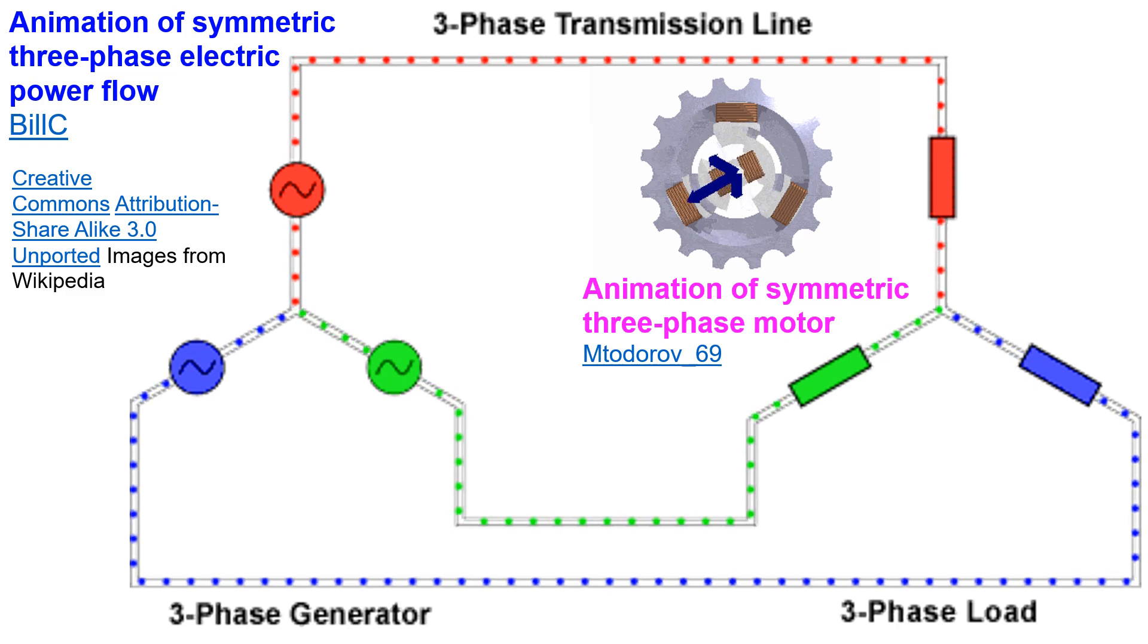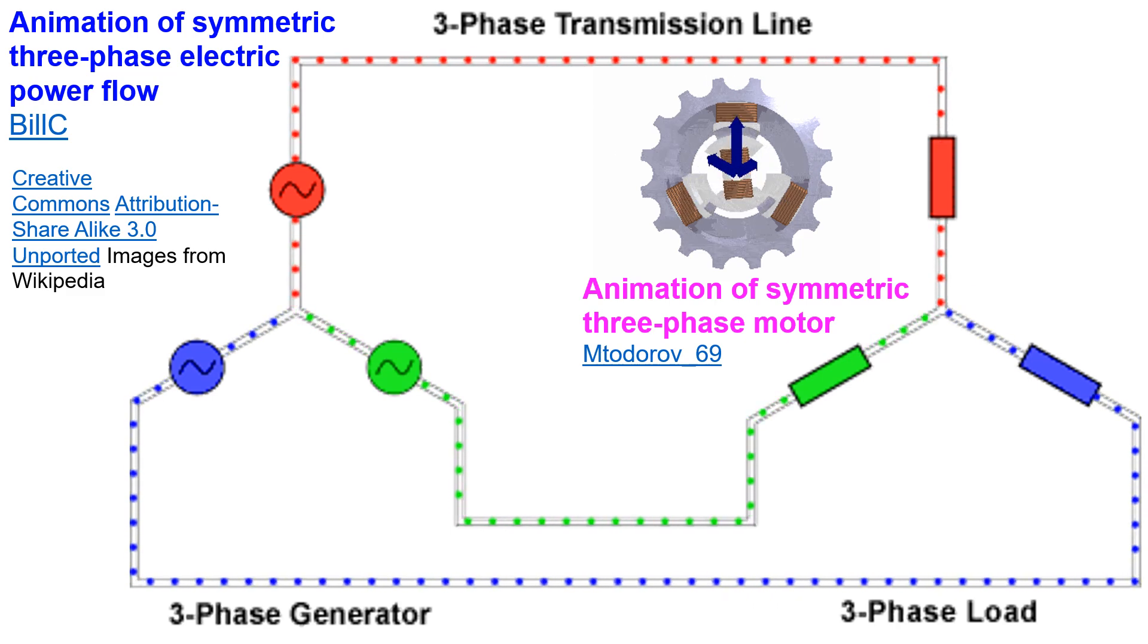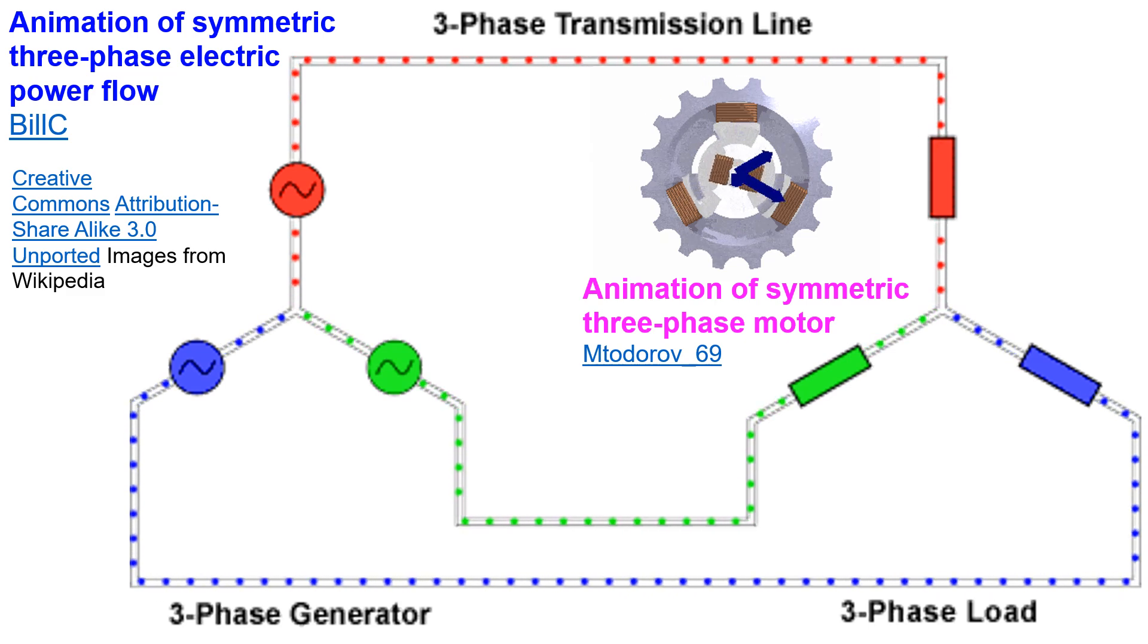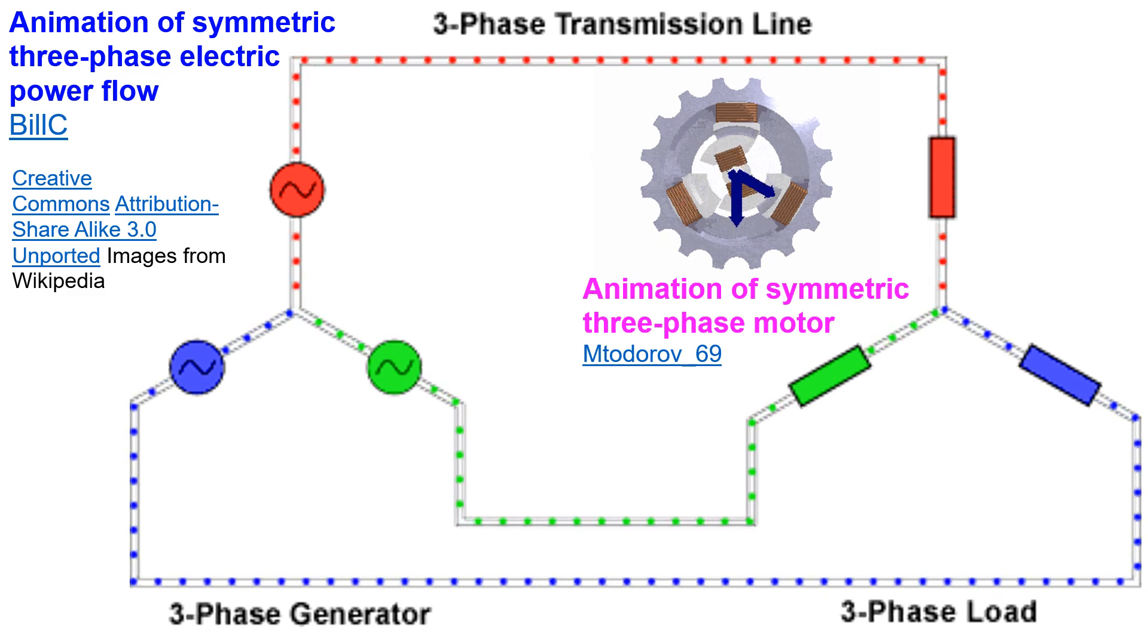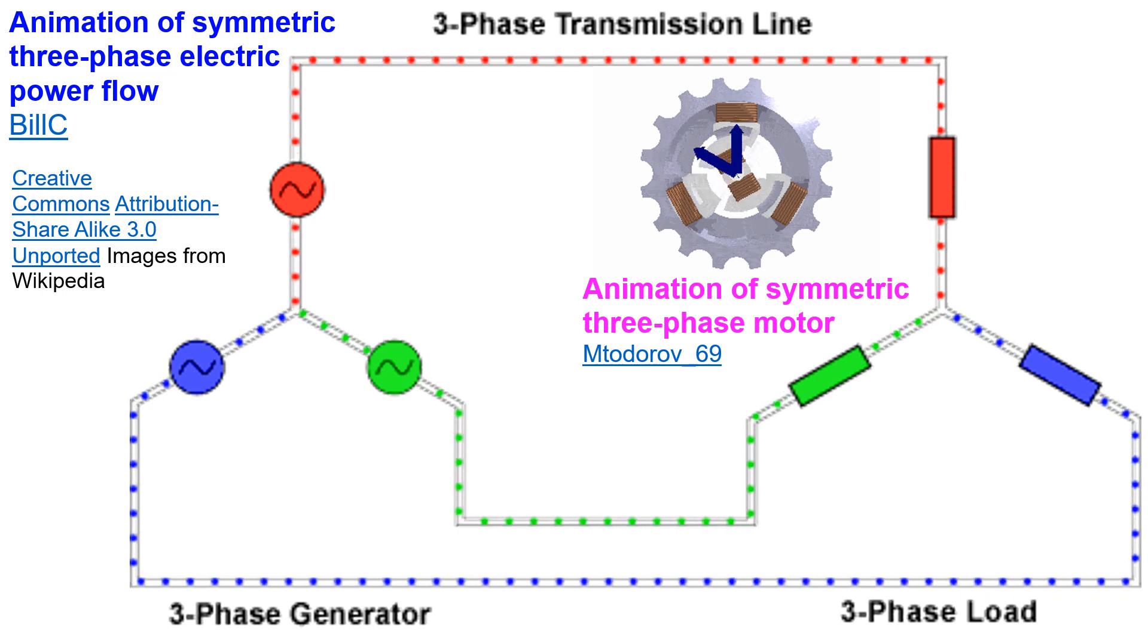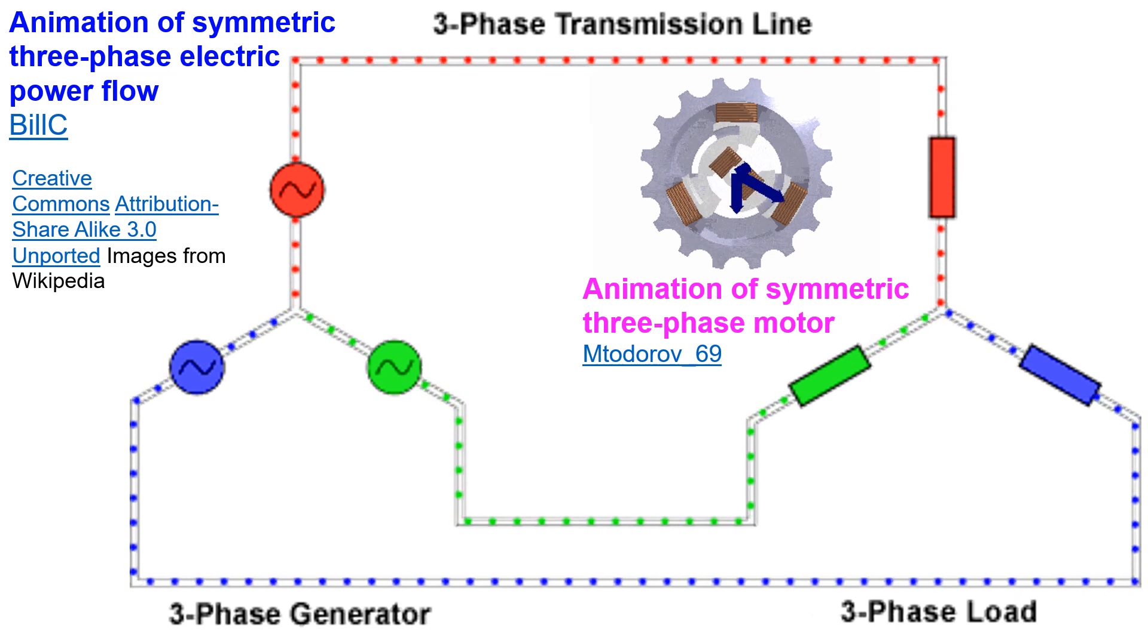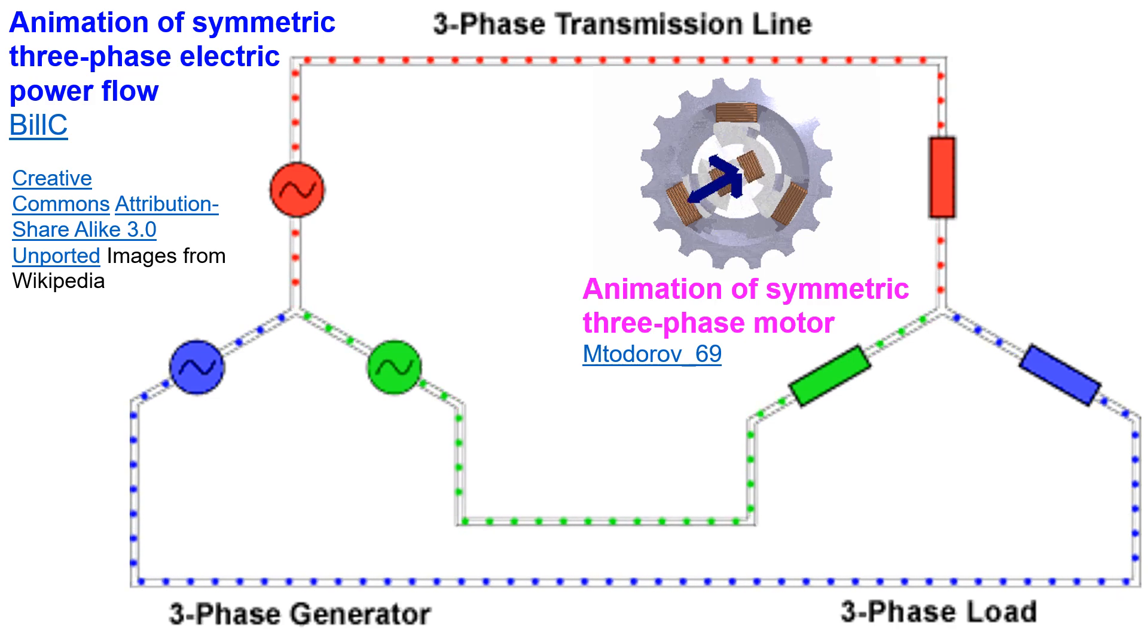The simplest way to generate three phase alternating current is by having three sets of coils in the generator, physically offset by an angle of 120 degrees to each other, which is one third of a complete 360 degrees. The three current waveforms produced by the generator will be equal in magnitude but 120 degrees out of phase to each other.